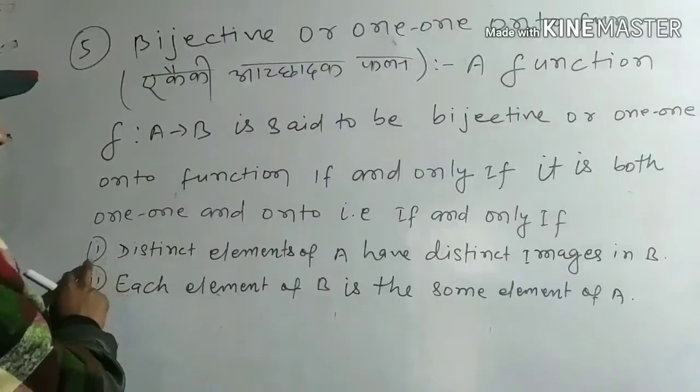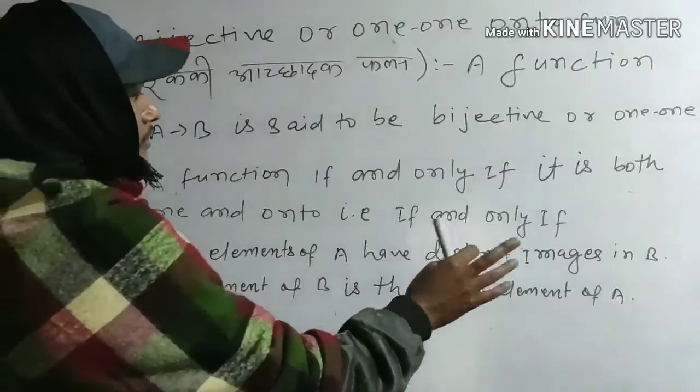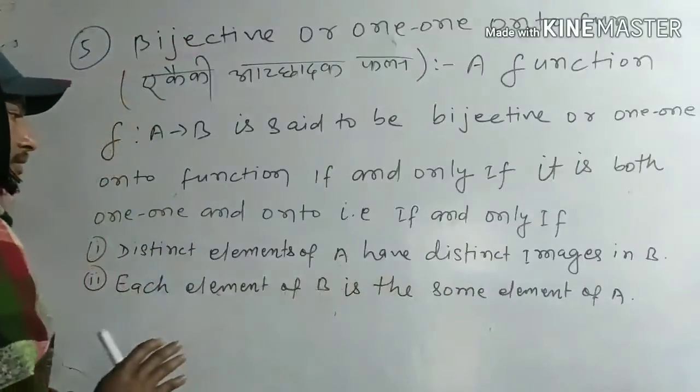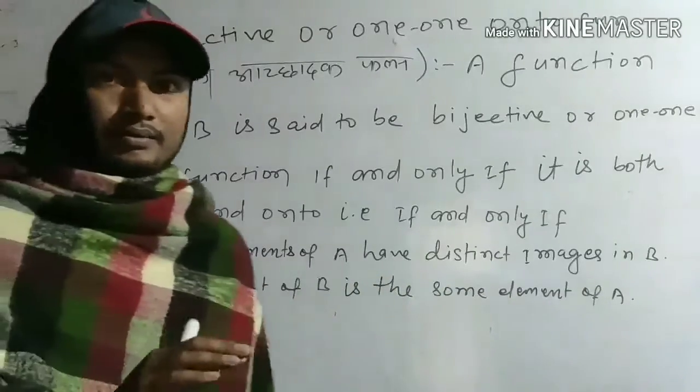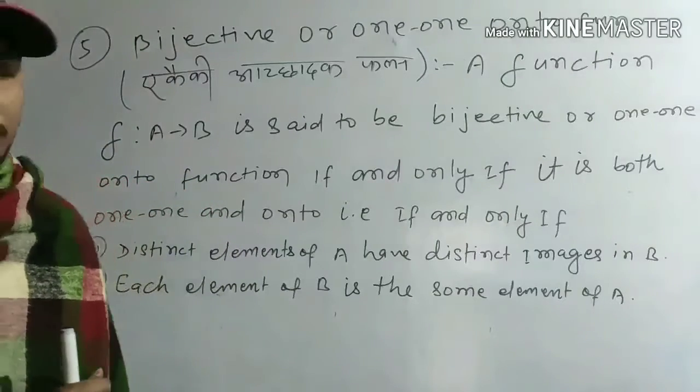First point: distinct elements of A have distinct images in B. This means different elements of A should have different images, i.e., they should be distinct (prathibin hona chahiye).